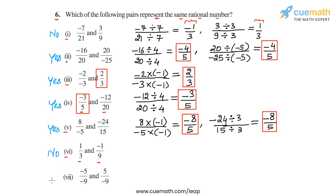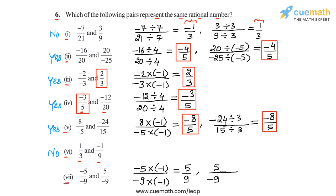In part 7, we have -5/-9 and 5/-9. For -5/-9, the HCF of 5 and 9 is 1, so we multiply by -1 to make the denominator positive, giving 5/9. For 5/-9, multiplying by -1 gives -5/9. The two standard forms are 5/9 and -5/9, which are not equal, so this pair does not represent the same rational number. The answer is no for part 7.